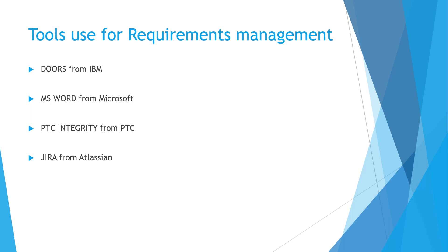Today's software industry uses different kinds of tools. Microsoft Word is used as a software requirements document. There is another tool called PTC Integrity, which stores software requirements and is used for application lifecycle management and product lifecycle management. JIRA is another tool used for software requirements — it is web-based, easy to use, has a friendly GUI, very good search functionality, and is also used for bug reporting.